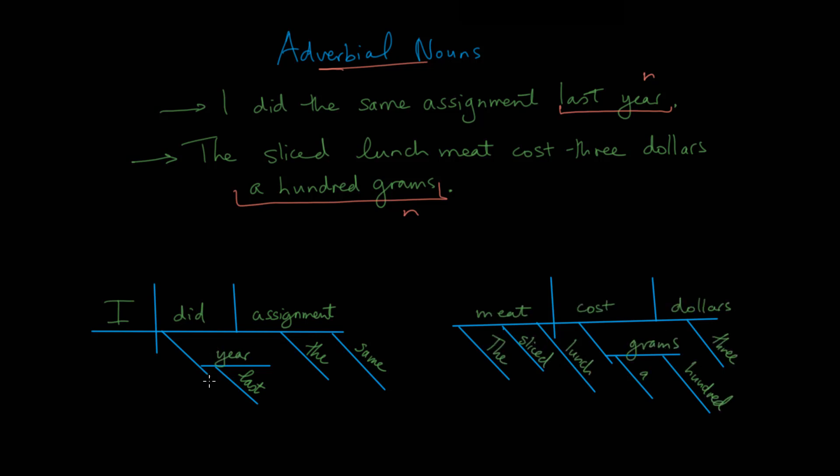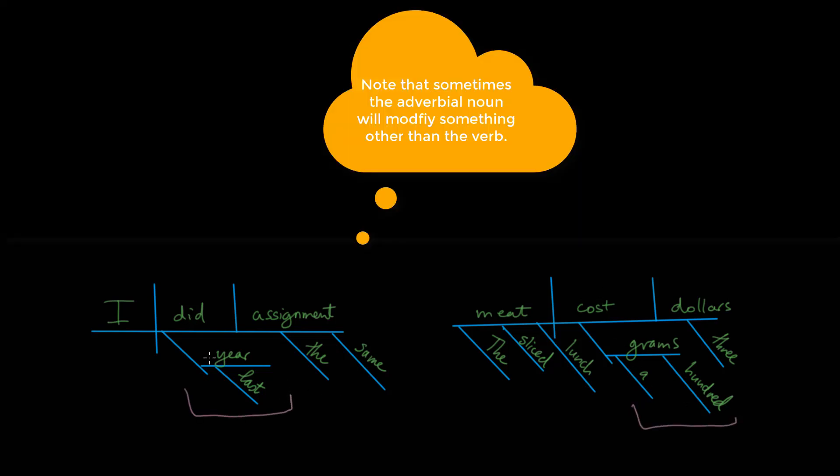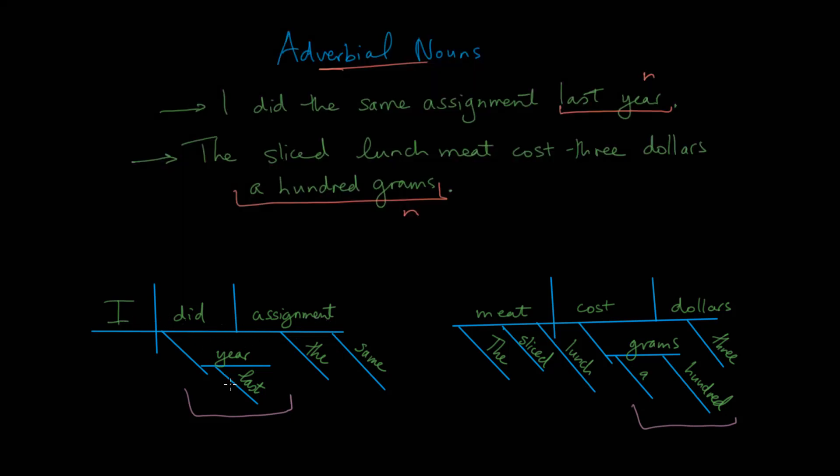What you can see then is that we've taken the adverbial noun phrase, and in each case we've put it under the verb that it modifies. For example, I did the assignment last year, so it describes when I did it. And then because there's no preposition here, we've left this line blank. Then we have the noun, and we have any modifiers underneath in both instances.